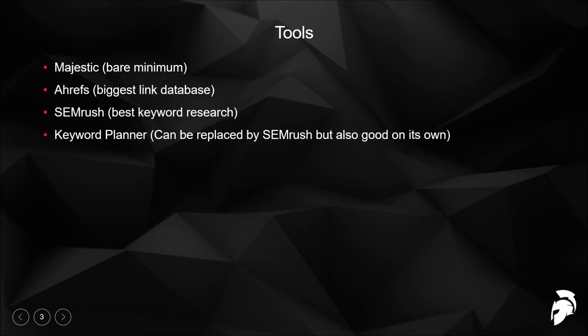Let's talk about the tools you'll need. You don't need all of these, but these are the ones I personally use that help the most. The bare minimum would be Majestic and Keyword Planner. Majestic gives you a really great idea of the types of links the competition is getting and you can easily replicate that.